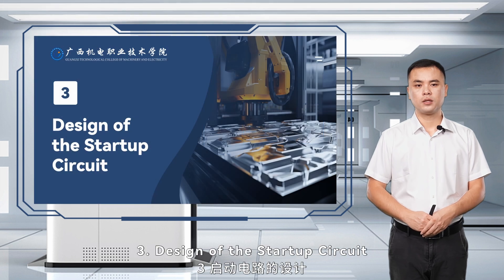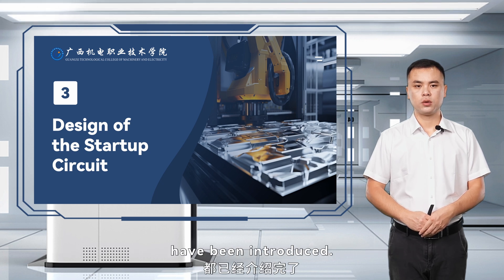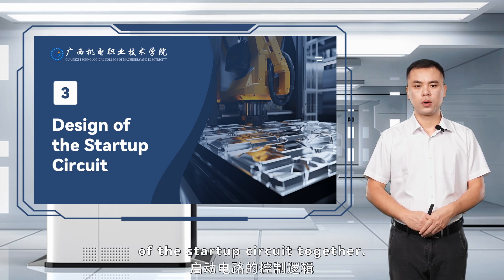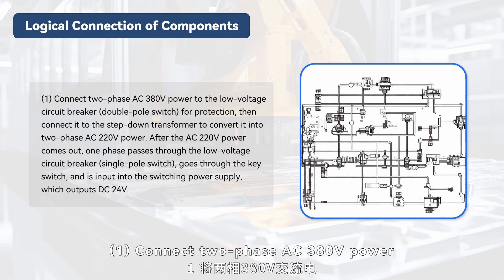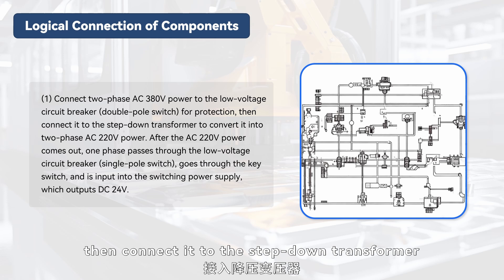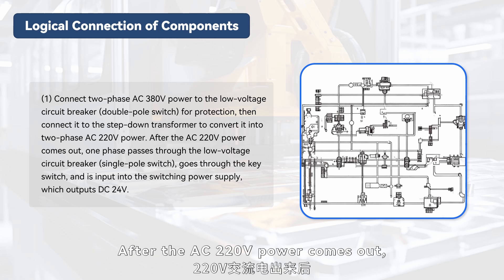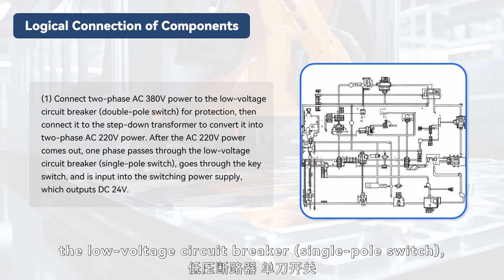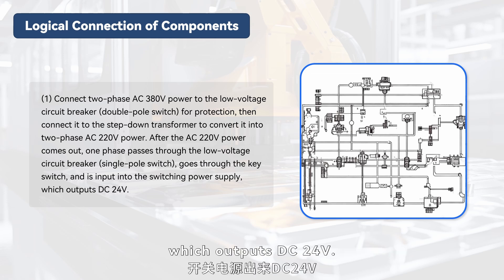Design of the Startup Circuit. All the components needed for the CNC machine tool system startup circuit have been introduced. According to the task requirements, let's review the control logic of the startup circuit. Step 1: Connect two-phase AC 380V power to the low-voltage circuit breaker (double-pole switch) for protection, then connect it to the step-down transformer to convert it into two-phase AC 220V power. After the AC 220V power comes out, one phase passes through the low-voltage circuit breaker (single-pole switch), goes through the key switch, and is input into the switching power supply, which outputs DC 24V.